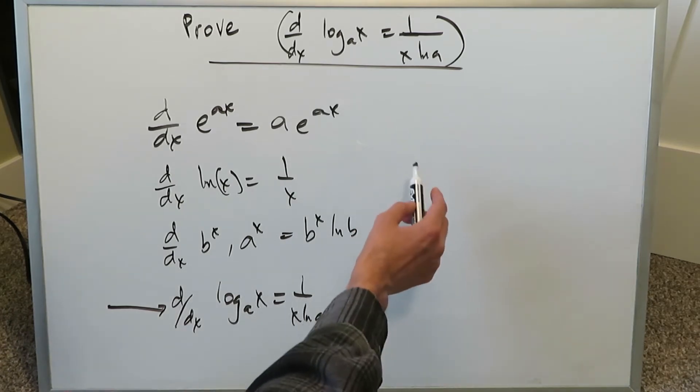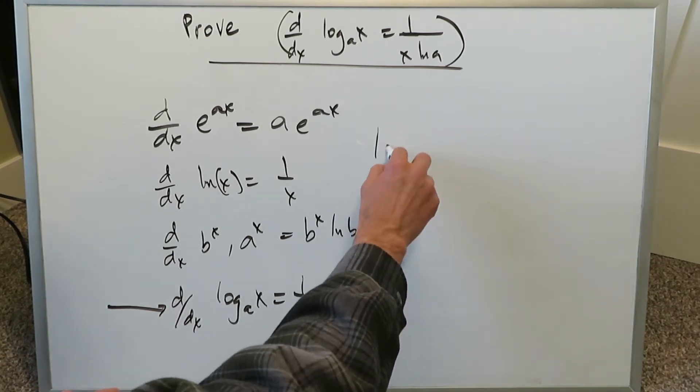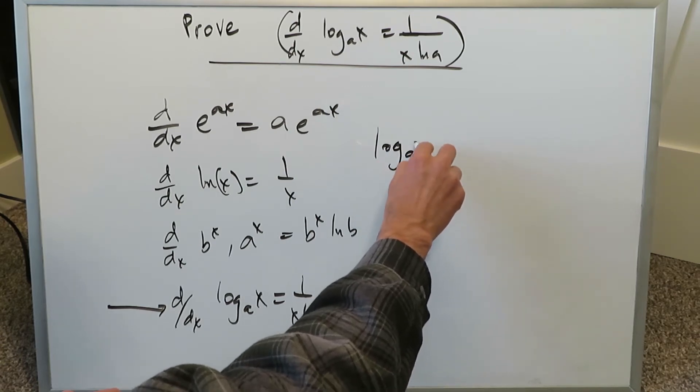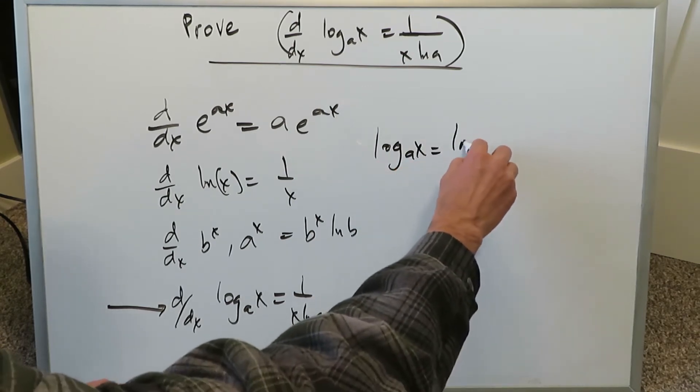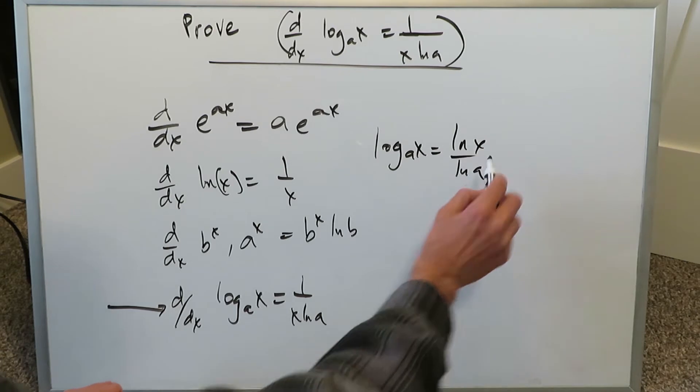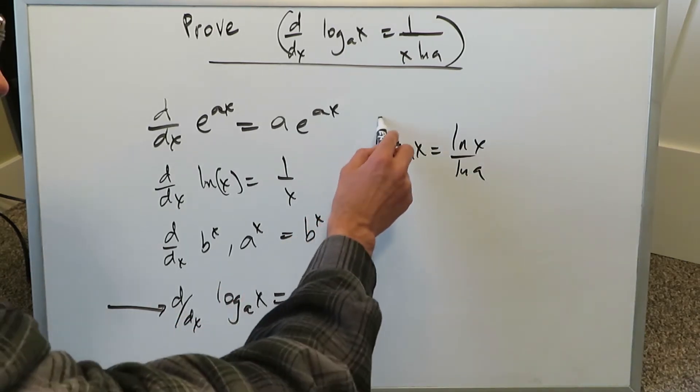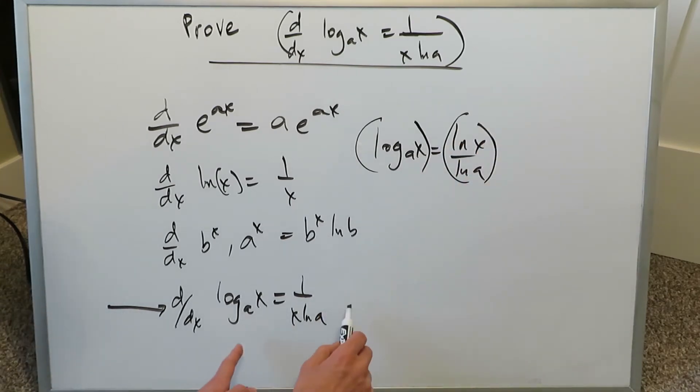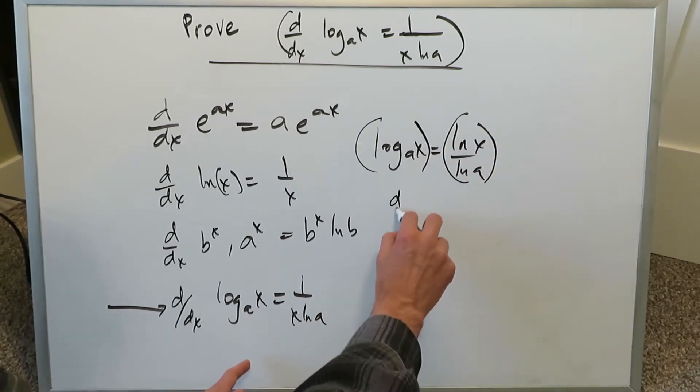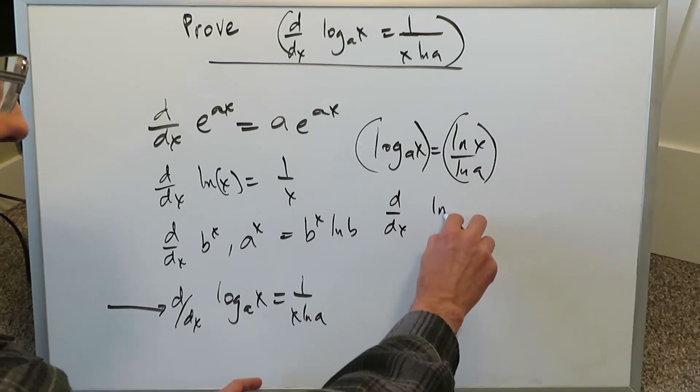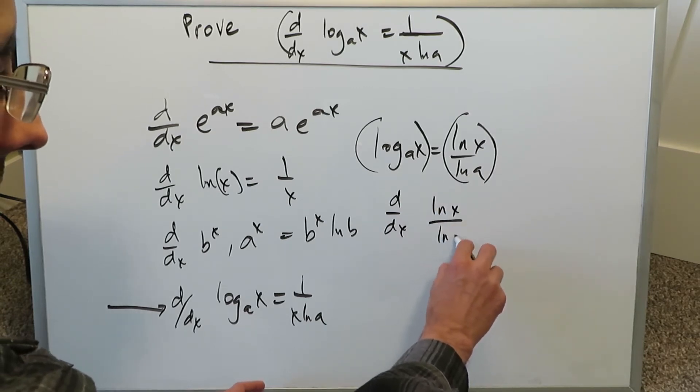It is this. Think about the change of base of logs formula. Log A x is synonymous as ln x over ln A. That's exactly what it is, the change of base of logs. If you're doing the derivative of this, you might as well be looking at the derivative of that. So when you're looking at the derivative of this, you're really looking at the derivative of this ln x over ln A.